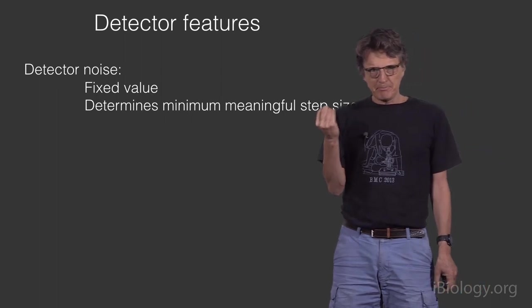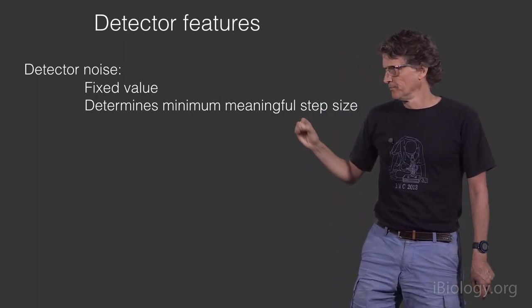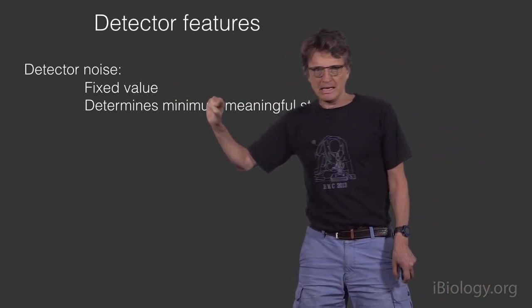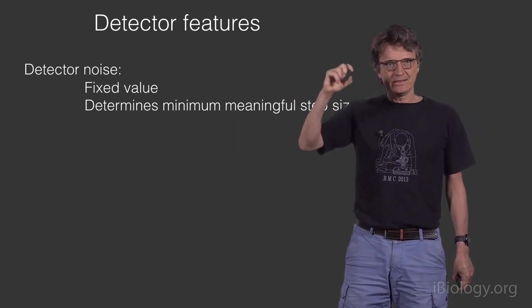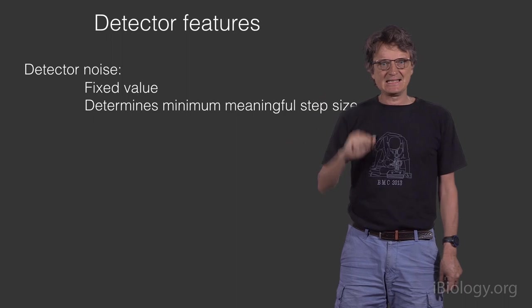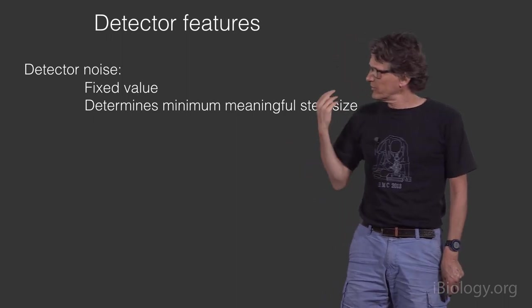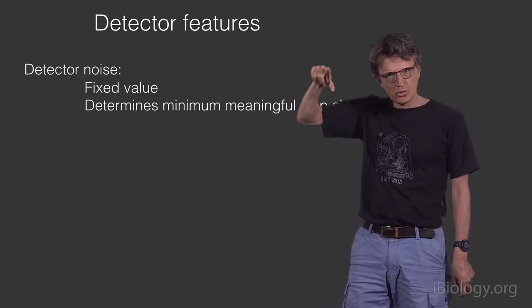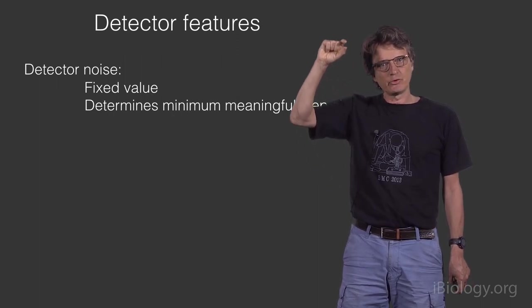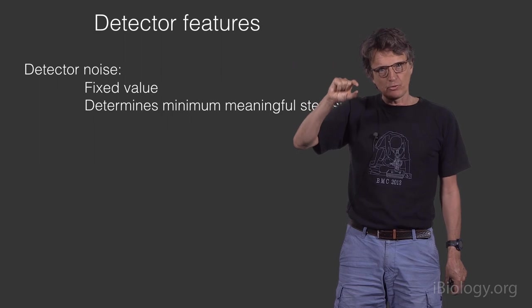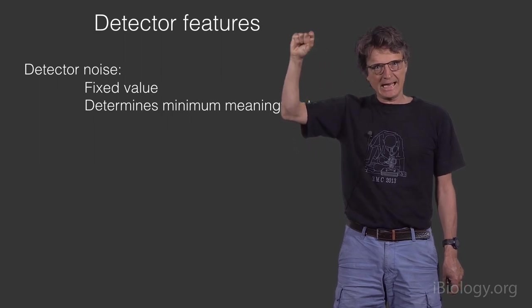A couple of important detector features—that noise that we talked about, it's kind of a fixed value that will always be added at every intensity value. When you think about that, the noise in your detector will determine the minimal meaningful step to go from one intensity level to the next.